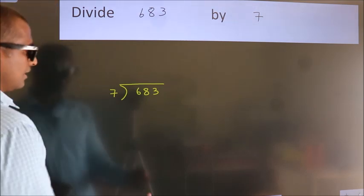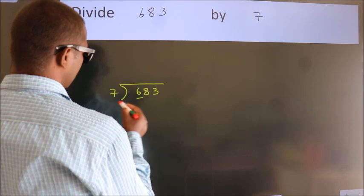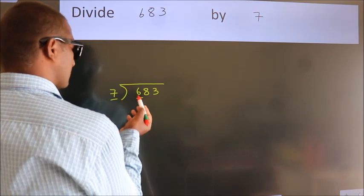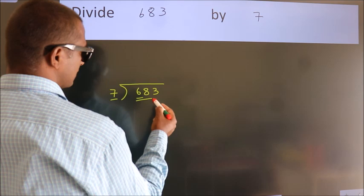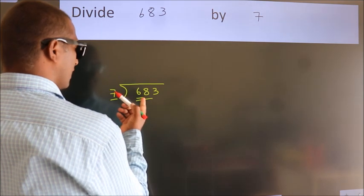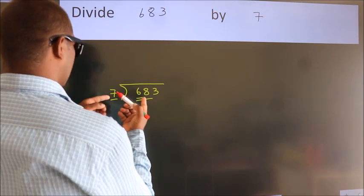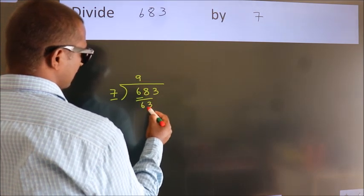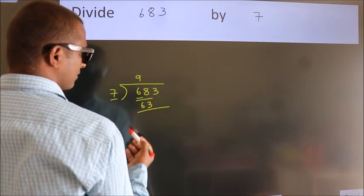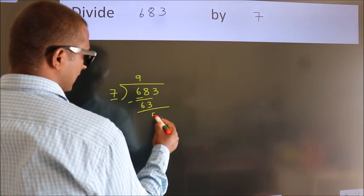Next. Here we have 6, here 7. 6 is smaller than 7. So we should take two numbers, 68. A number close to 68 in the 7 table is 7 nines, 63. Now we should subtract, we get 5.